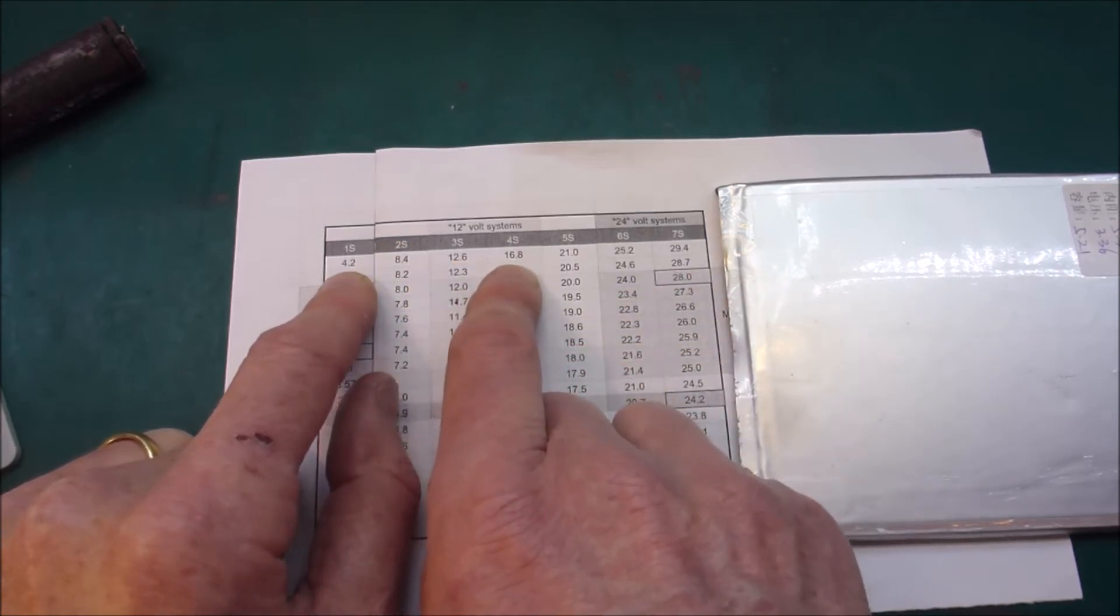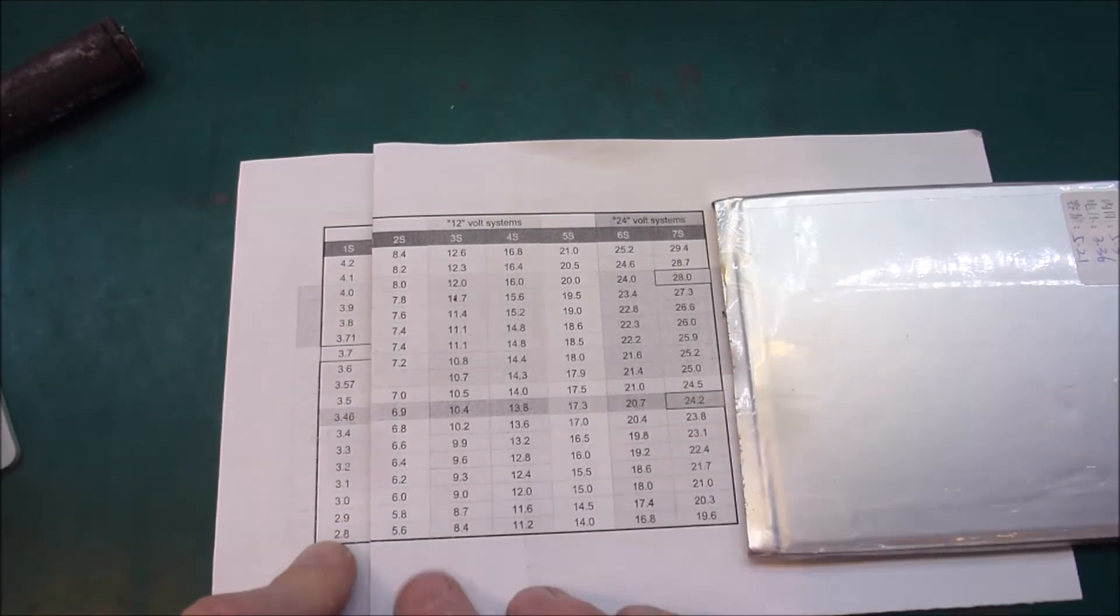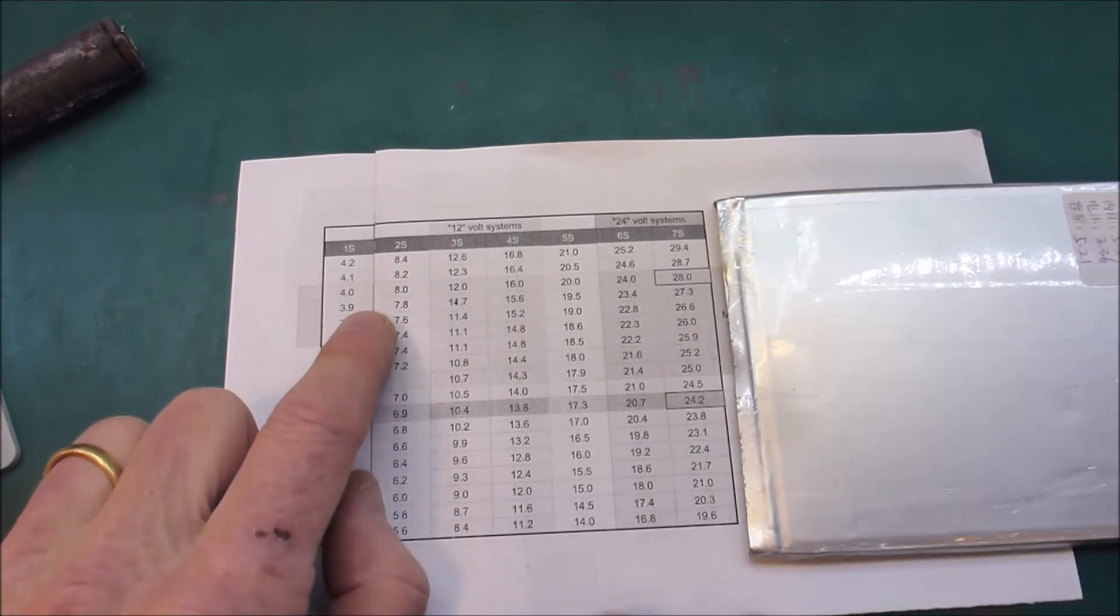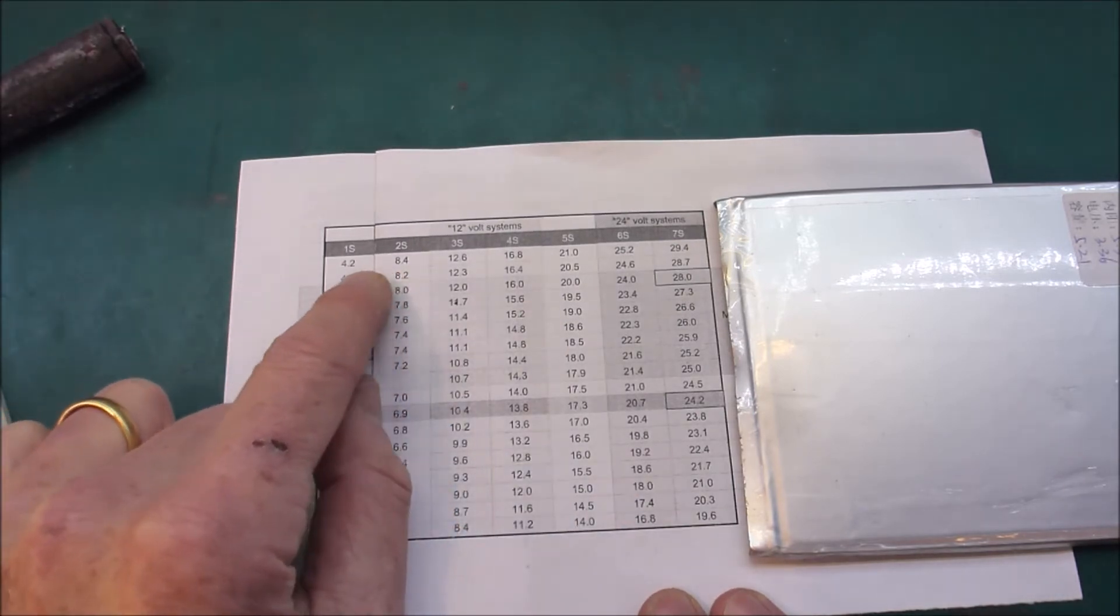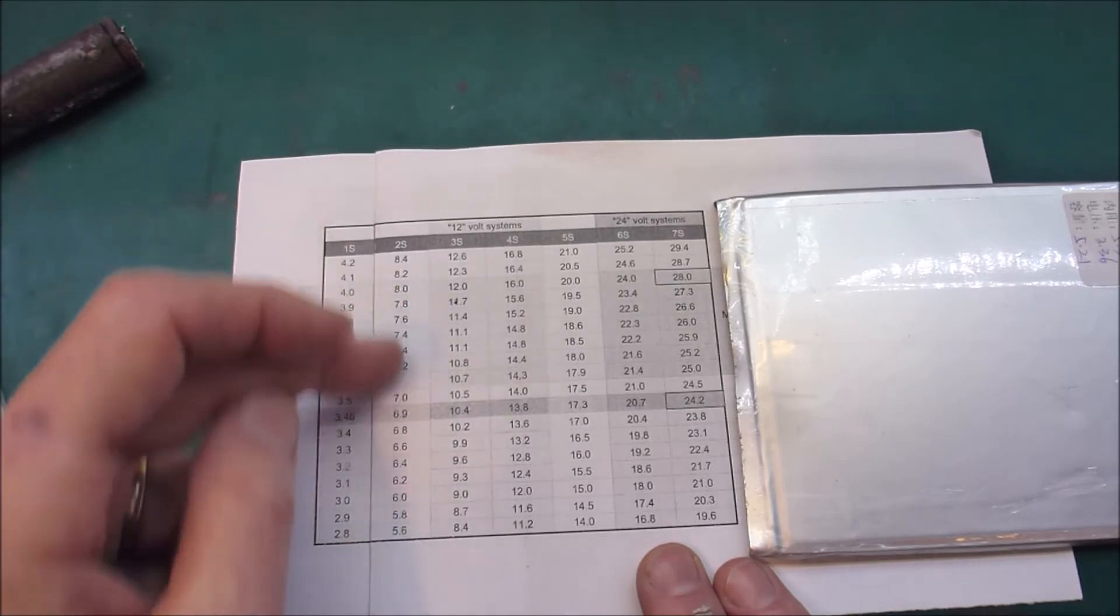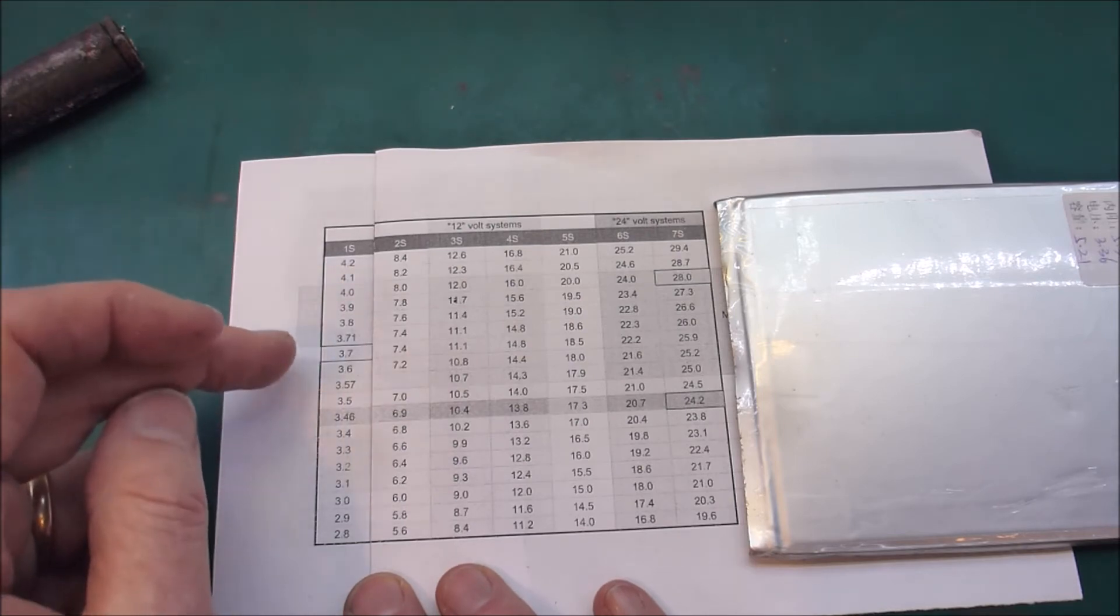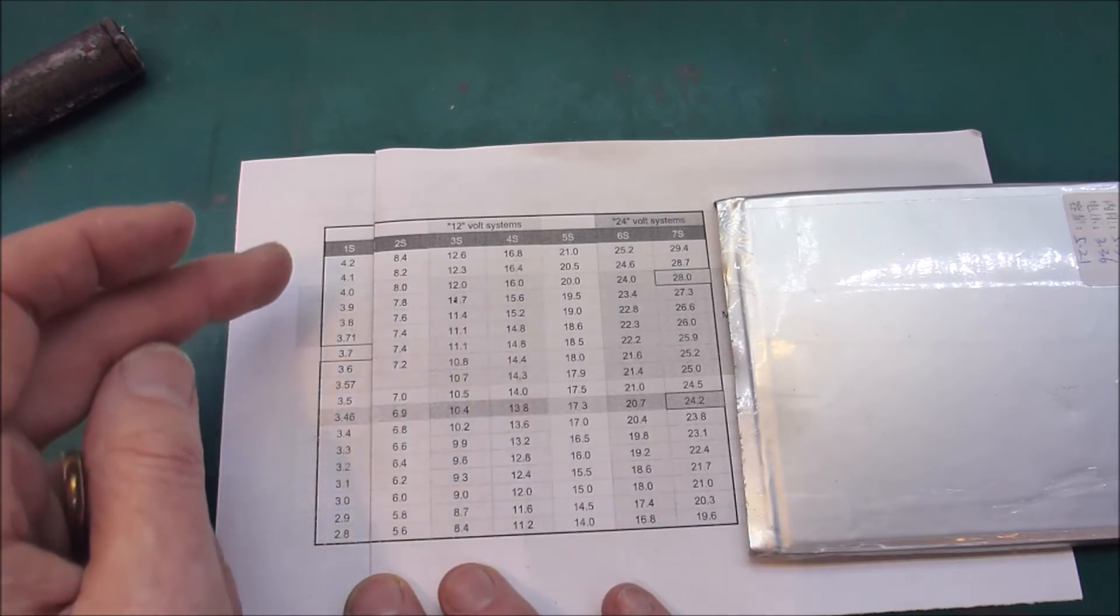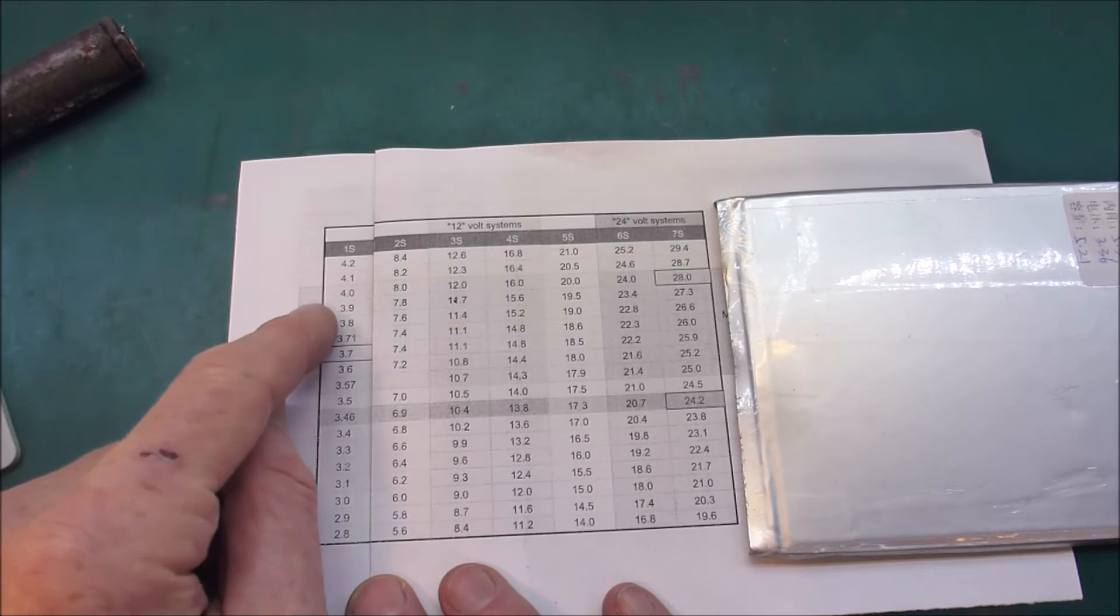So if you were doing a 4S pack you could set your upper threshold to 16.8 or 29.4. And then your lower limit could be somewhere down around here. However, if you wanted to make your pack last a long time then you don't want to stress it by fully charging it and you don't want to stress it by fully discharging it. You want to keep it in a happy medium. And the general consensus seems to be if you can keep it between 80% and 40% wherever that might be then your batteries will last a very long time.